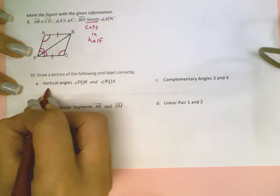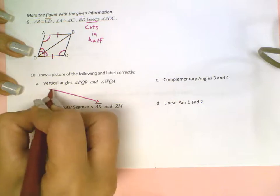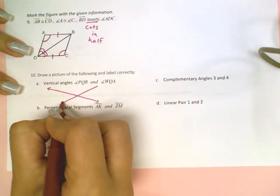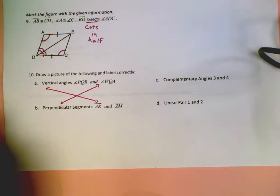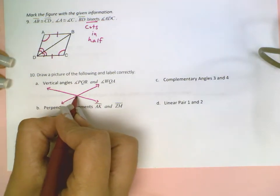So when two lines intersect, that creates vertical angles. Vertical angles are angles that are going to be across from each other and share a common vertex. This is the vertex right here. Right there is the vertex.